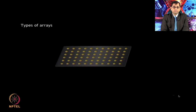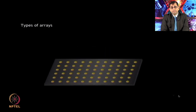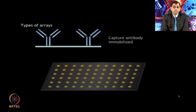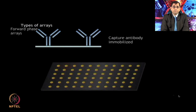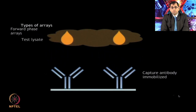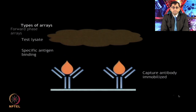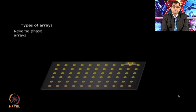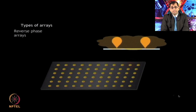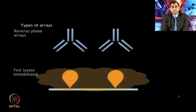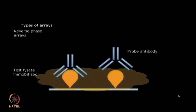There are two types of protein arrays commonly used. In forward phase arrays, the analyte of interest such as an antibody or aptamer is bound to the array surface and then probed by a test lysate which may contain the antigen of interest. In reverse phase arrays, the test cellular lysate is immobilized on the array surface and then probed using detection antibodies specific to the targets of interest.